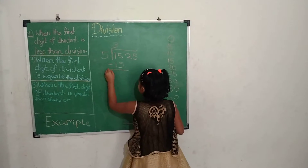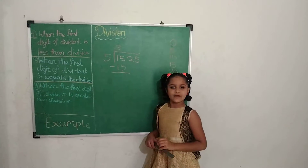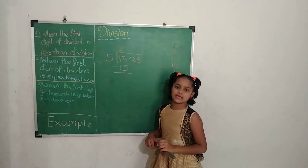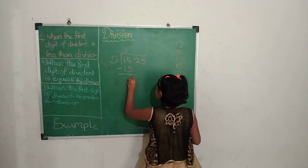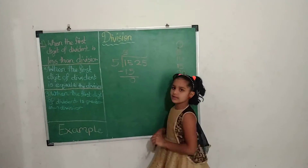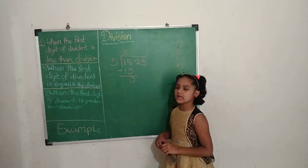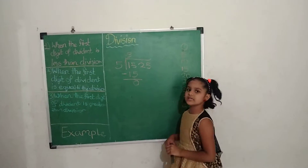Now we do the subtraction. 5 minus 5 equals 0, and 1 minus 1 equals 0.